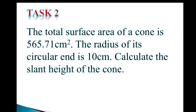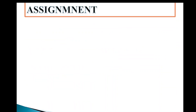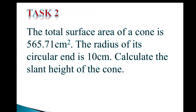That brings us to the end of that example. Here is another task: the total surface area of a cone is 565.71 centimeters squared, and the radius of the circular base is 10 centimeters — calculate the slant height of the cone. That is the end of this short video. Thank you very much.